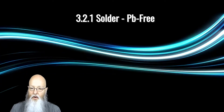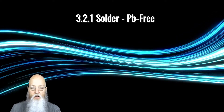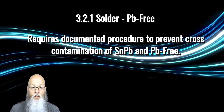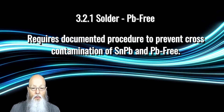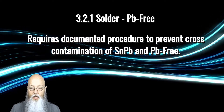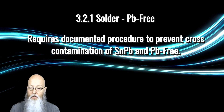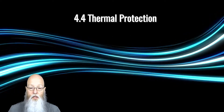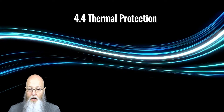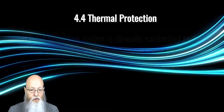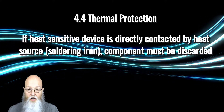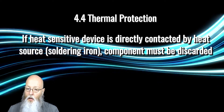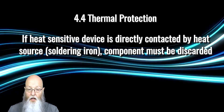In addition to 3.2.1 Solder, Pb-free is one the manufacturers should be aware of. There is now a requirement for Class 2 and 3 manufacturing processes to have a documented procedure that provides controls to minimize the risk of cross-contamination between Pb and Pb-free products or processes. Another significant addition is found in 4.4, Thermal Protection. A new requirement has been added for all classes that if a soldering heat source, such as an iron tip or other manual soldering device, makes contact with the termination of a heat-sensitive component, that the component shall be discarded and replaced with a new component.